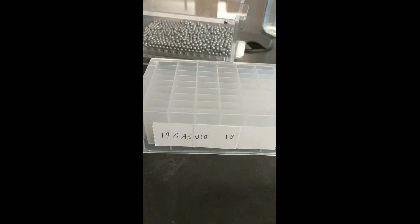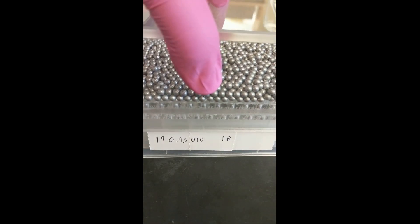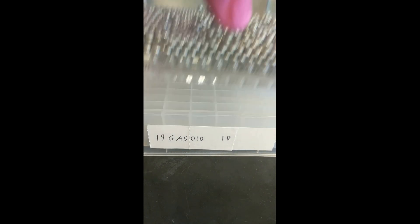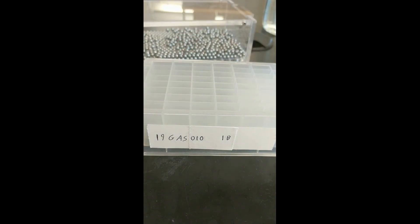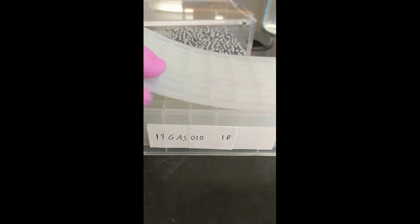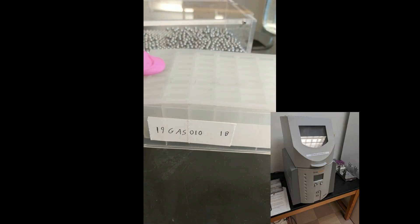We will then place two BBs into each cell using apparatus such as this or placing the BBs in by hand. We will then seal up the plate and take it to the genome grinder.